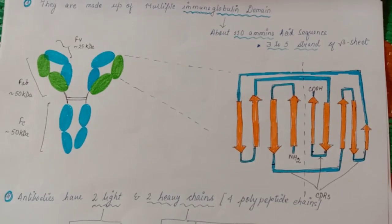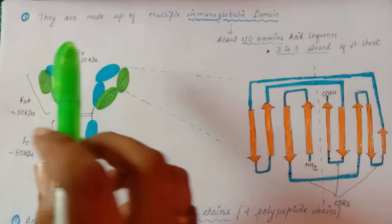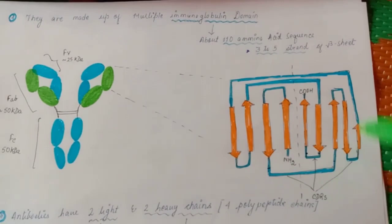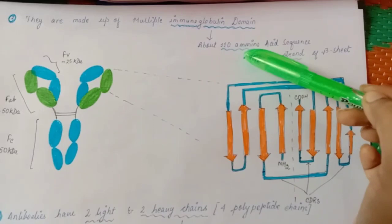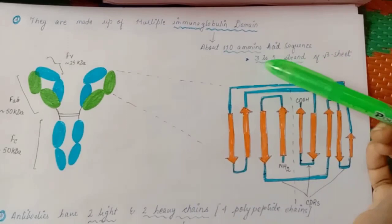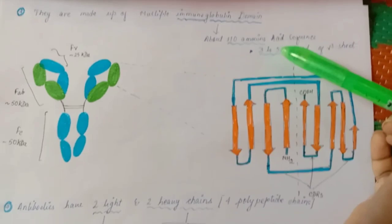These antibodies are made up of multiple immunoglobulin domains. This immunoglobulin domain is about 110 amino acids. They could vary. Three to five strands of beta sheet is present. Each strand contains 110 amino acids on average. It may vary also.